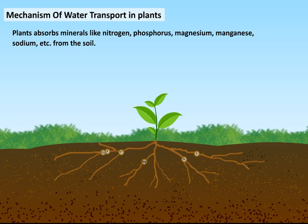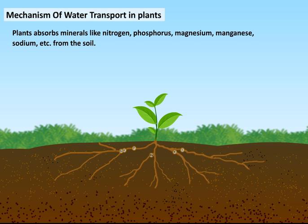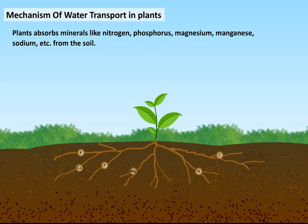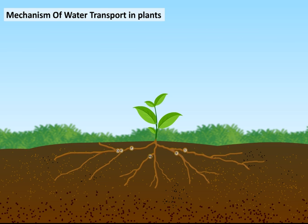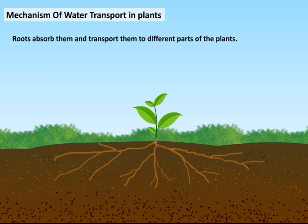Plants absorb minerals like nitrogen, phosphorus, magnesium, manganese, sodium, etc. from the soil. Roots absorb them and transport them to different parts of the plants.